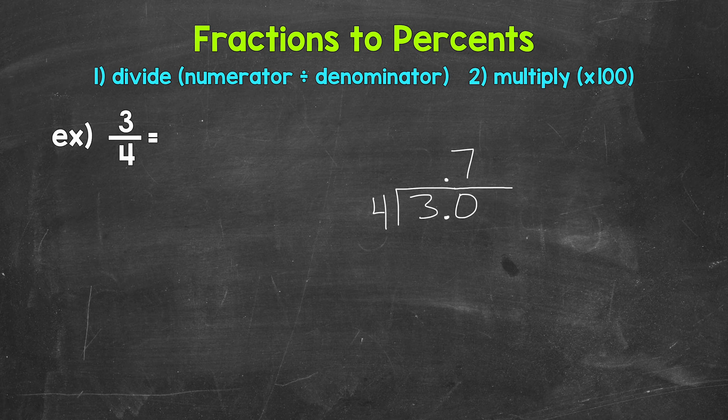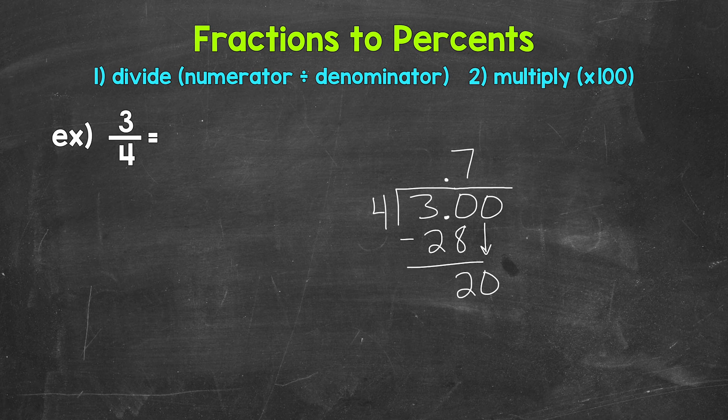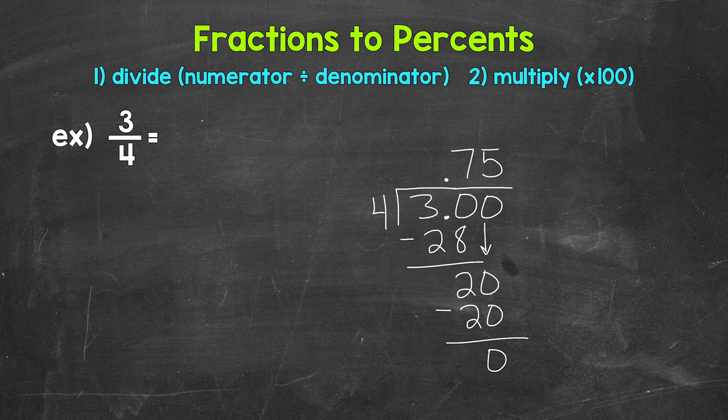Now we multiply 7 times 4, 28, subtract 30 minus 28 is 2. Now we don't have a clean cut zero there at the bottom, so we need to continue on here. And we do that by using another zero that we can bring down. And now we have 20, 20 divided by 4, that gives us 5. 5 times 4 is 20, subtract 20 minus 20 is zero.